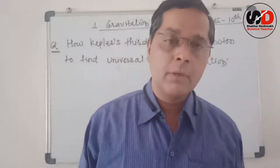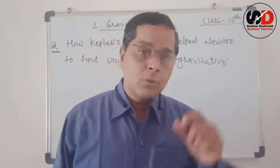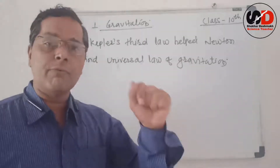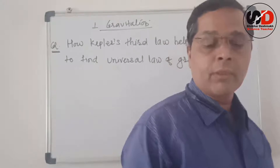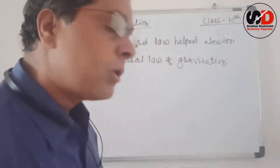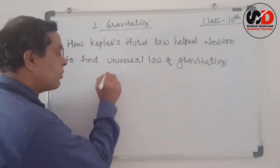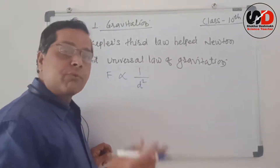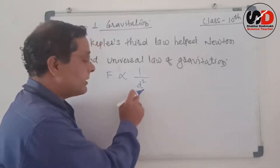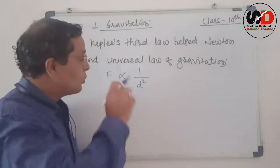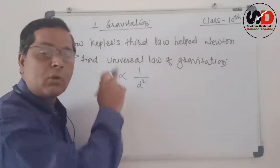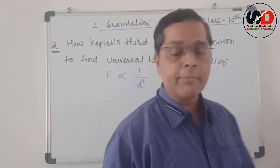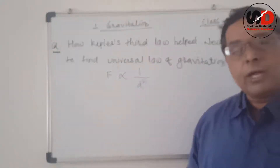Hello friends, welcome to the classroom teaching. I am Shekhar. Today we are going to discuss a very simple question: how Kepler's third law helped Newton in finding his equation of the universal law of gravitation — that means the inverse square dependence on distance. We have to prove that F is inversely proportional to d square, where d is the distance between two objects. That is what we are going to see today.